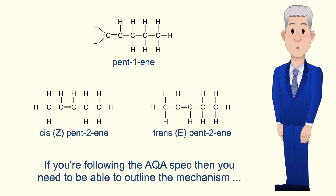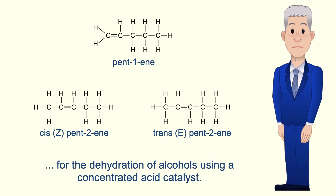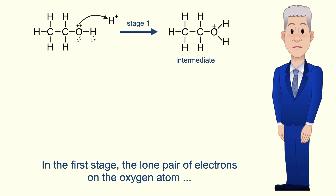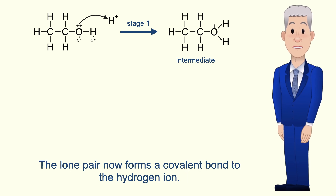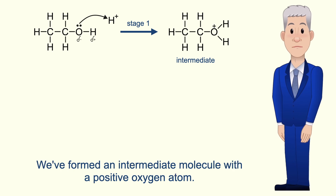If you're following the AQA spec then you need to be able to outline the mechanism for the dehydration of alcohols using a concentrated acid catalyst. In the first stage the lone pair of electrons on the oxygen atom are attracted to the positive hydrogen ion from the acid catalyst. The lone pair now forms a covalent bond to the hydrogen ion, and we've formed an intermediate molecule with a positive oxygen atom.